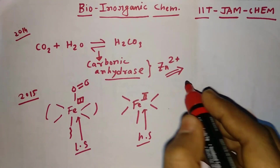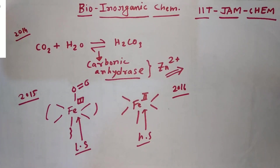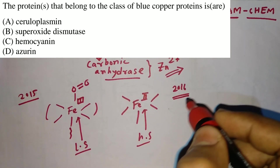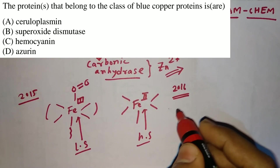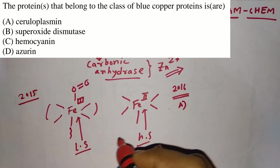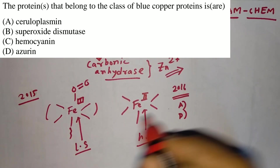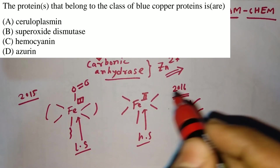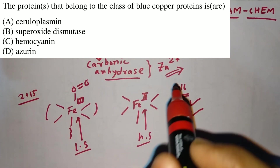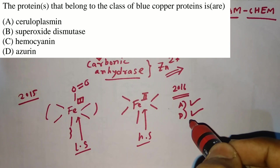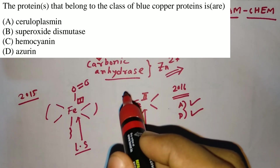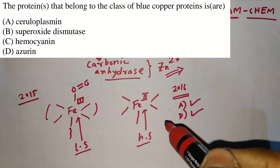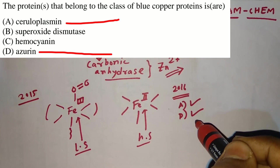Coming to JAM 2016, the question asks which proteins belong to the class of blue copper proteins. The correct options are A (ceruloplasmin) and D (azurin), because these centers containing Cu2+ show intense blue coloration. That is why they are called blue copper proteins.